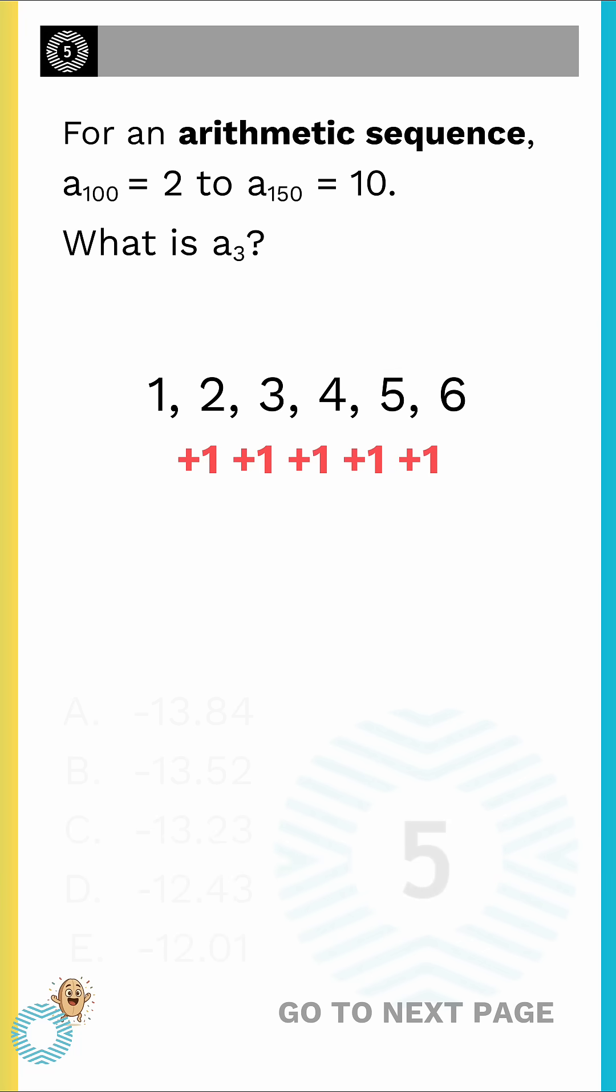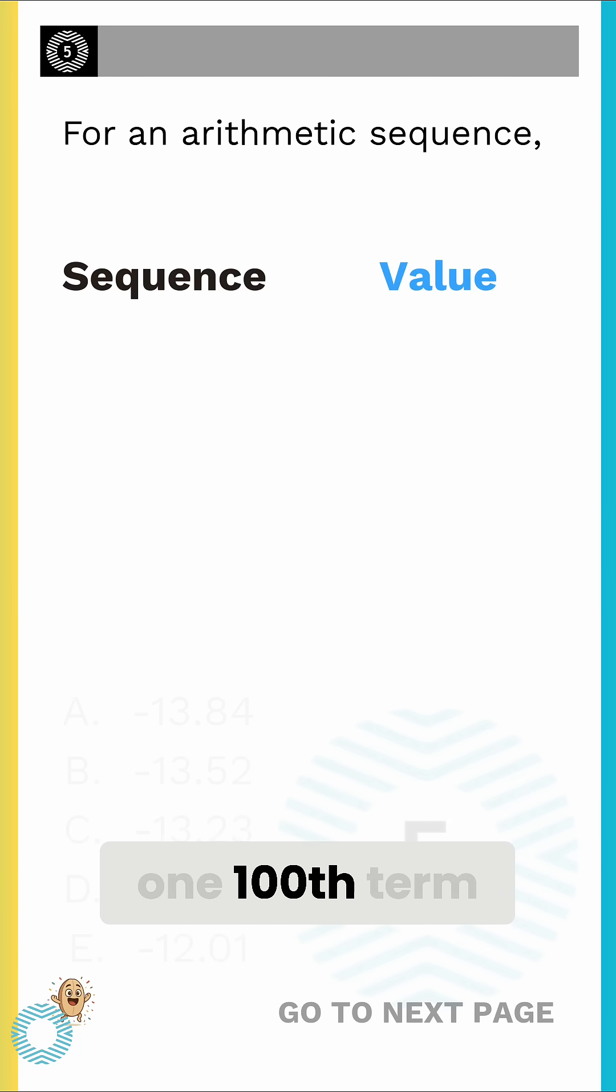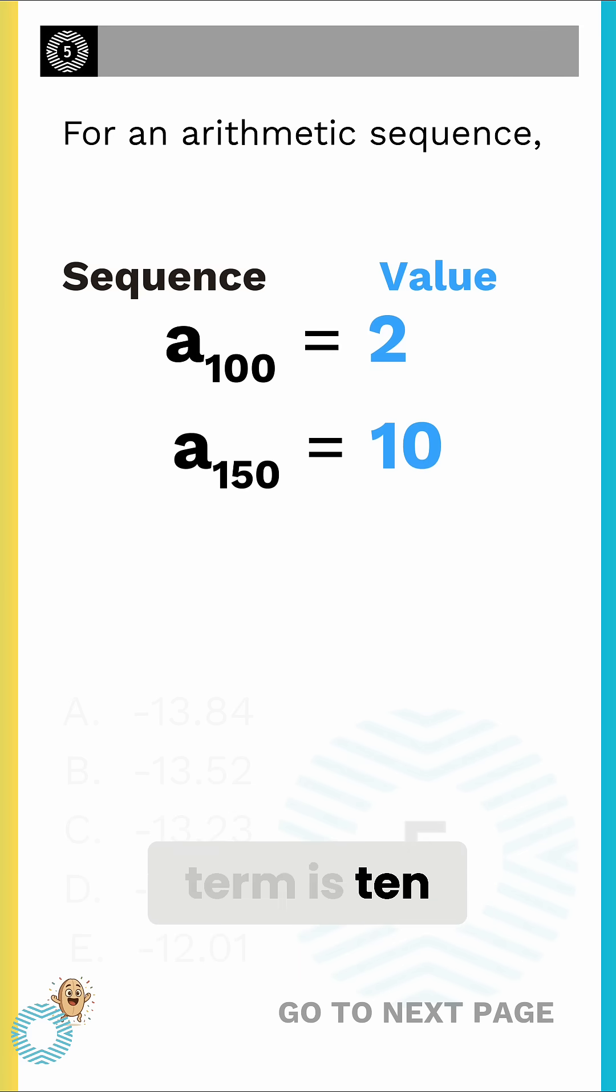For example, the sequence 1, 2, 3, 4, 5, 6 progresses by adding 1 each time. The problem states the 100th term is 2 and the 150th term is 10, and it asks for the third term.